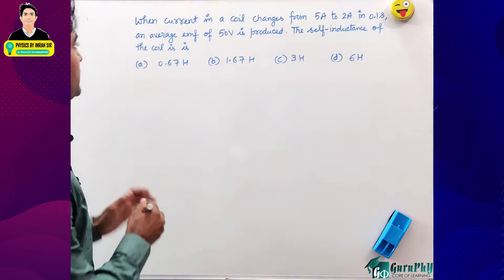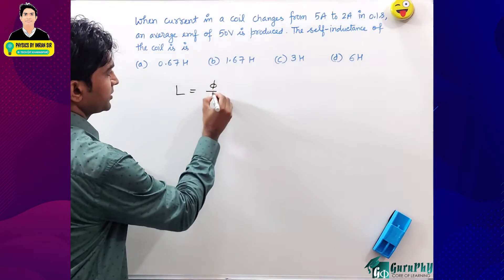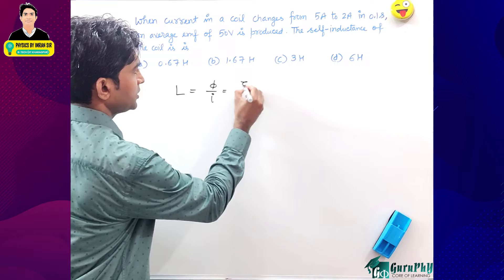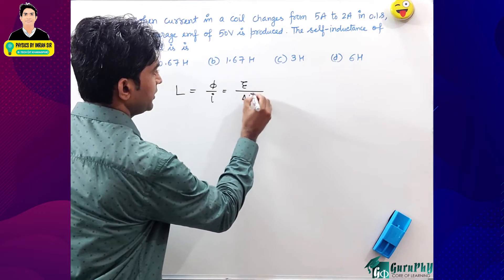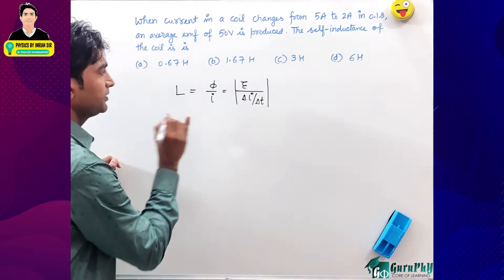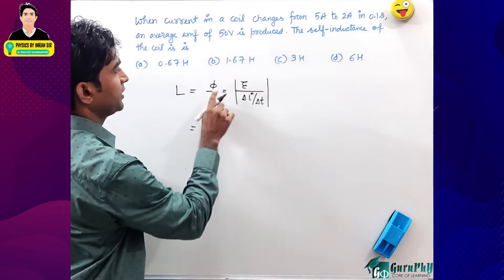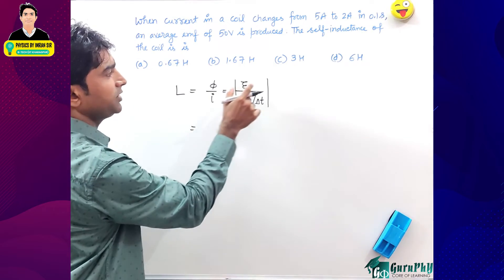The self-inductance of the coil is defined as magnetic flux per unit current, or induced EMF per unit rate of change in current. For this problem, we have an induced EMF of 50 volts and need to calculate the self-inductance.